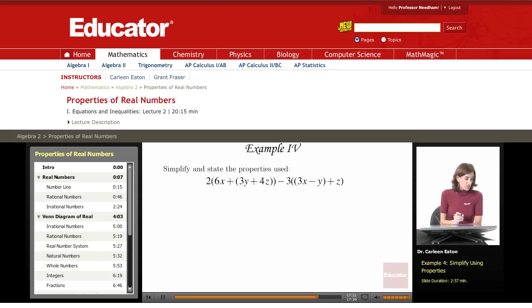We're asked to simplify and state the property used for each step of simplification. First, I want to get rid of the parentheses, so I'm going to use the distributive property.